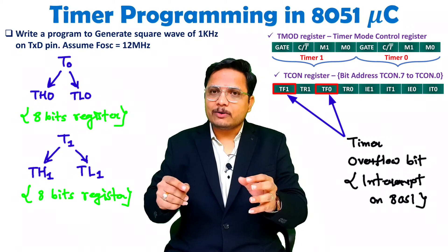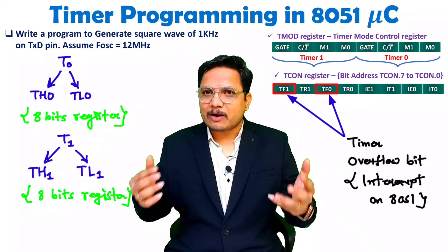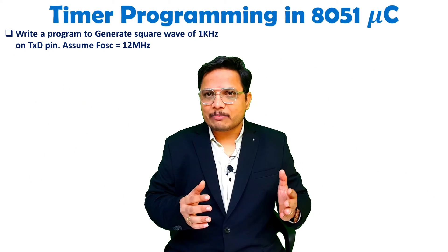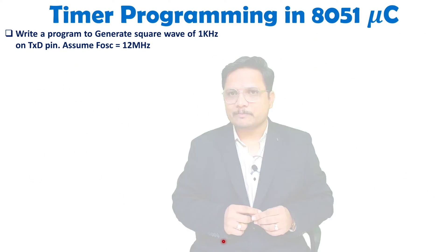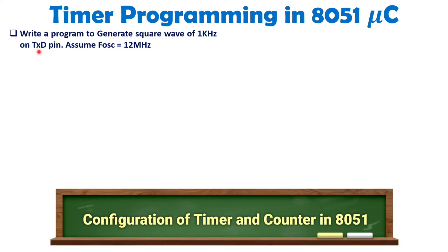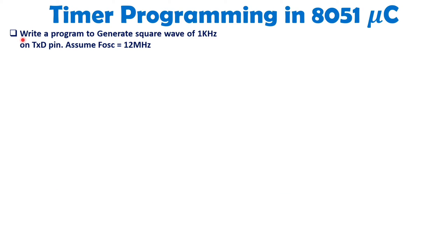Now I will explain how to program the timer counter with a practical example. The problem statement is: write a program to generate a square wave of 1 kHz on the TXD pin. Assume oscillator frequency to be 12 MHz. Since we are generating delay, 8051 should be used as a timer only.